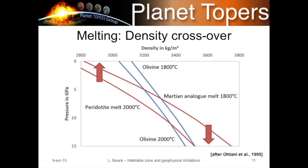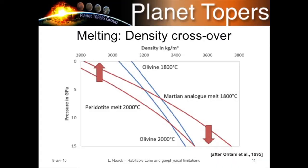Melts — shown here as a Martian analog melt at 1,800°C and a peridotite primitive Earth-mantle mixture — have density that increases much more steeply with pressure because liquids are more easily compressed. So when melting occurs in shallow regions, the melt is less dense and rises upwards, producing volcanism. But with a stagnant lid, melting beneath it can occur at greater depth where the melt is denser than the surrounding mantle — there is no buoyancy, so no volcanism. This is important and I'll come back to it.